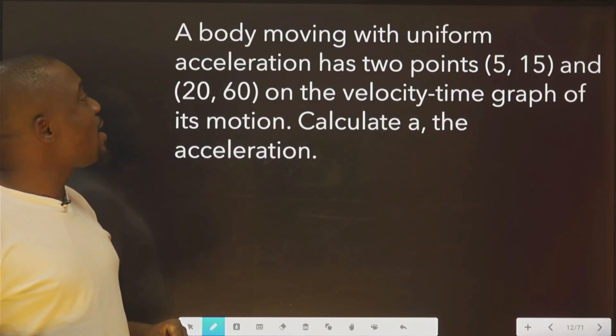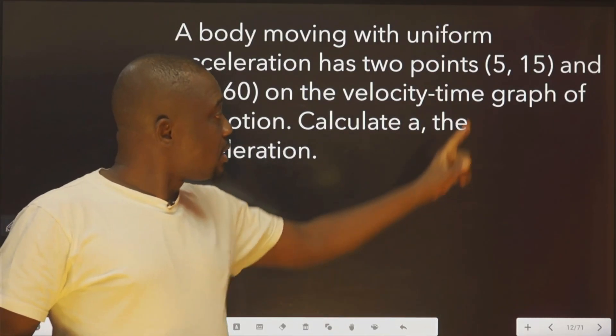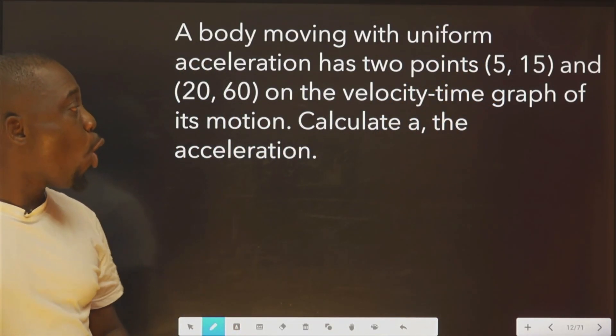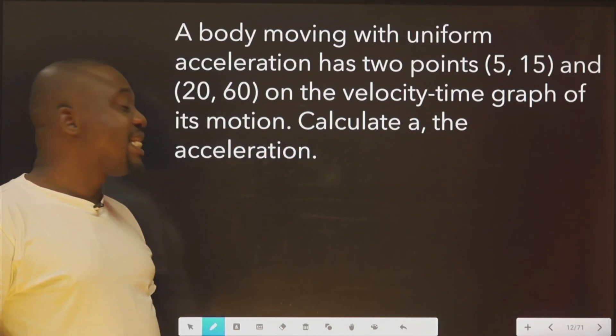Now, let's look at this. It says a body moving with uniform acceleration has two points (5, 15) and (20, 60) on the velocity-time graph of its motion. Calculate the acceleration.